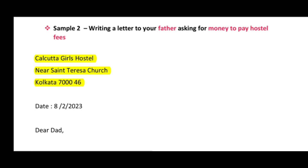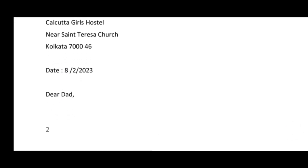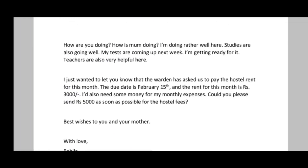Now let's look at the second sample letter: writing a letter to your father asking for money to pay hostel fees. This letter is written to your father so that you can pay the hostel fees. The person you are writing to is your father, and the main topic is money to pay for the hostel fee. The address here is 3 lines: Calcutta Girls Hostel, near Center Church, Kolkata 46. After that the date is 8th September 2023, then 'Dear Dad' — or papa, or whatever term you use for your father.